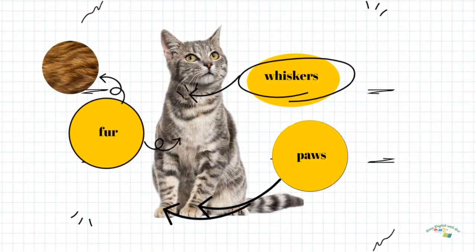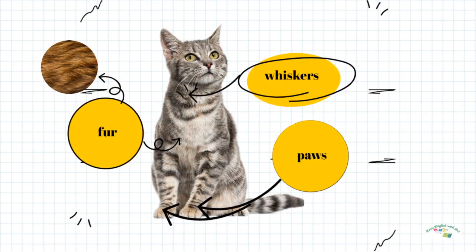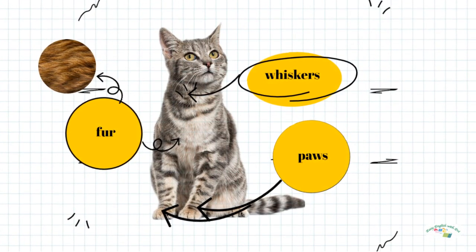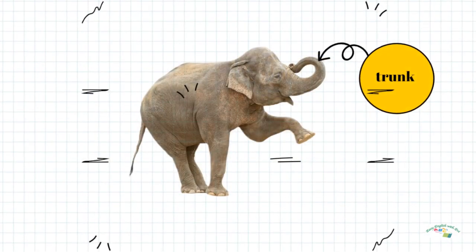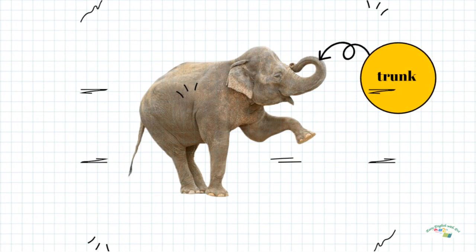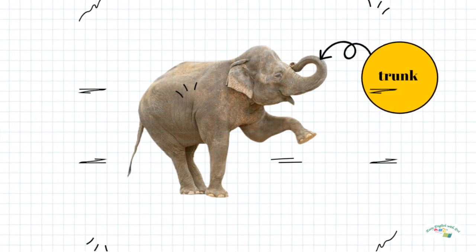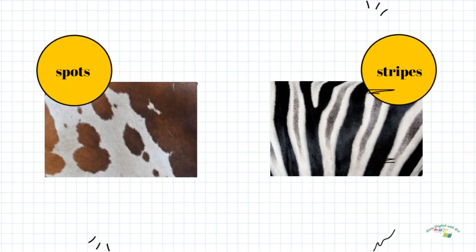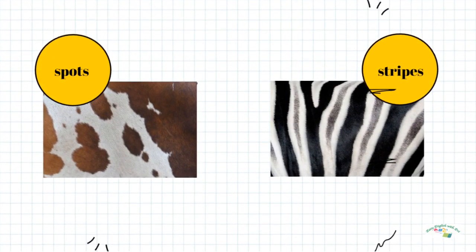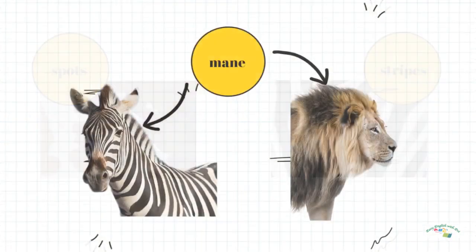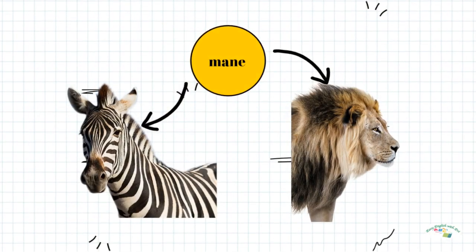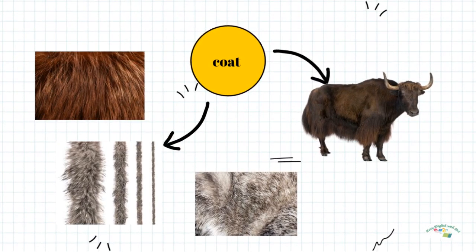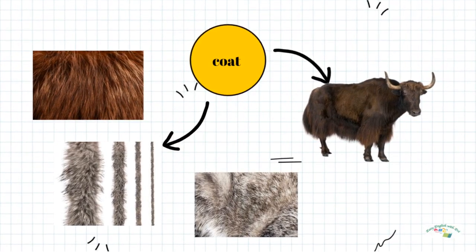Fur. Whiskers. Paws. Trunk. Spots. Stripes. Mane. Coat.